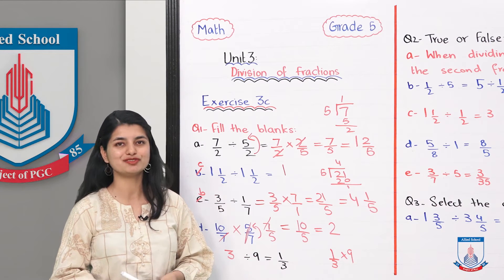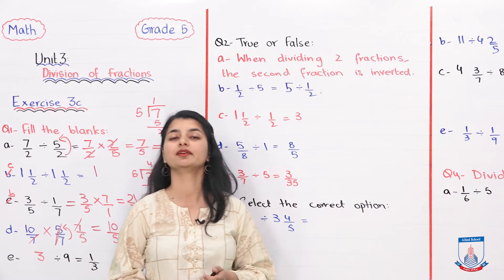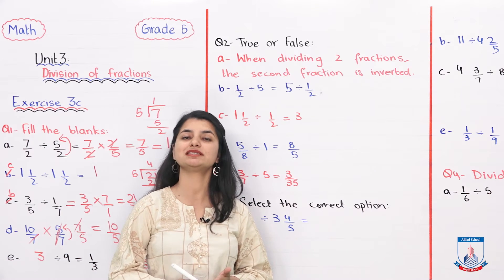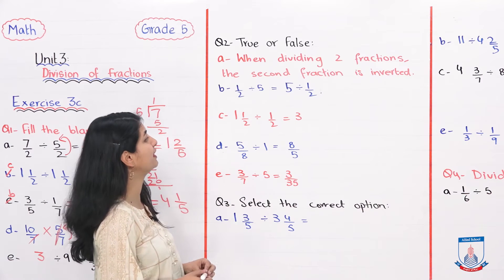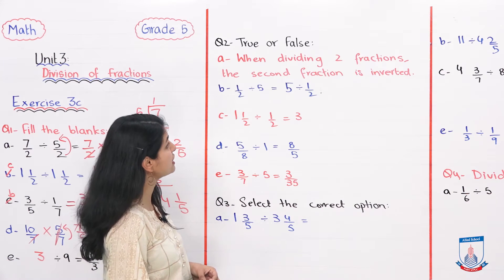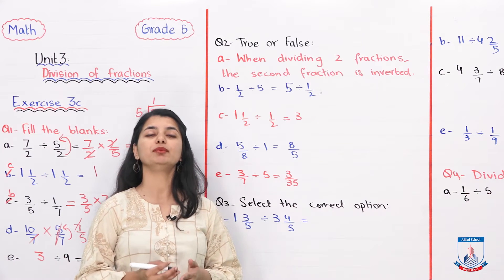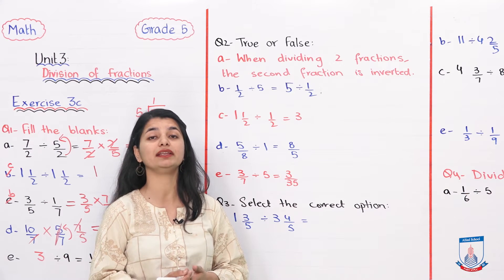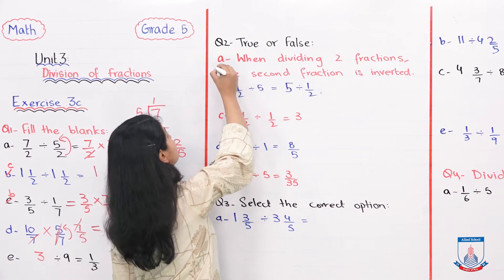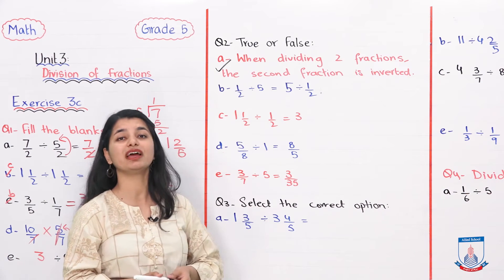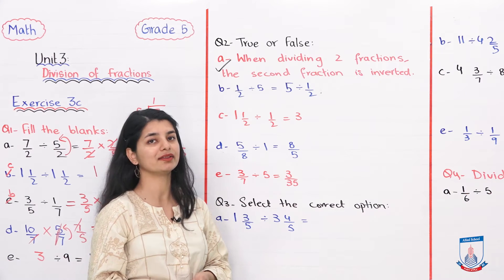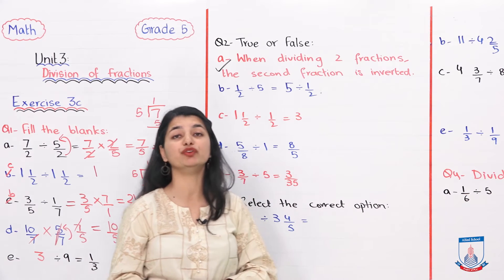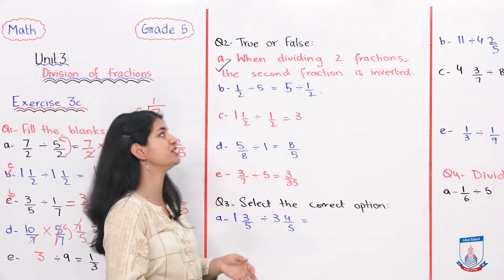For part E, negative 9 divided by 1 over 3. We invert, so negative 9 multiplied by 3 over 1 equals negative 27. The answer is negative 27.